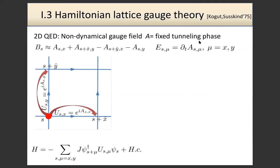How do we build this gauge theory in practice? Since quite some years, there has been a lot of interesting progress in engineering what is called a synthetic gauge field — just a classical external gauge. One takes the Hamiltonian formulation of lattice gauge theory and treats the gauge field classically, giving atoms on a lattice with phases. Without these phases we get a magnetic flux; if we make the phases change in time we get an electric field.